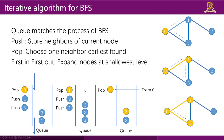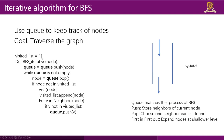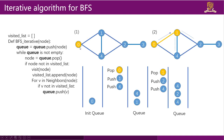Now you can see why the iterative DFS function is generalizable. To write BFS, you simply replace the stack with a queue and the function works. This is the code for BFS.